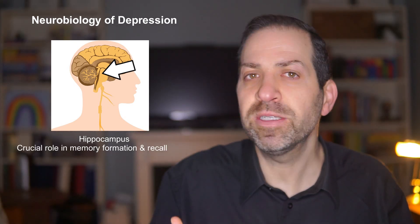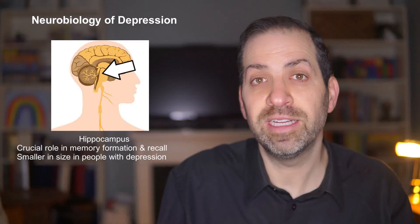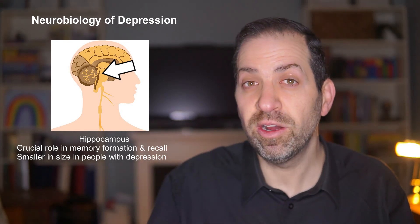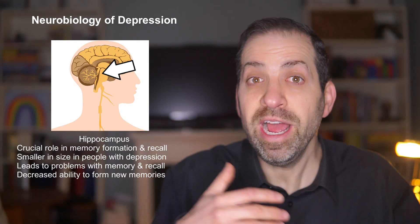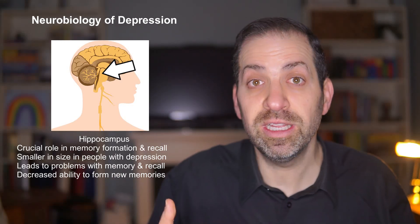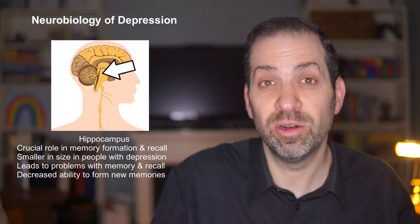The next part of the brain I want to talk about is the hippocampus, a small structure that plays a crucial role in memory formation and recall. It helps us remember the events in our lives, learn new things, and navigate our surroundings. In people with depression, the hippocampus is often smaller in size than in healthy individuals. This reduced size can lead to difficulties with memory and recall, as well as a decreased ability to form new memories. When the hippocampus is smaller, we have a harder time creating and retrieving memories, which can lead to forgetfulness and difficulty learning new information — something commonly seen in depression.